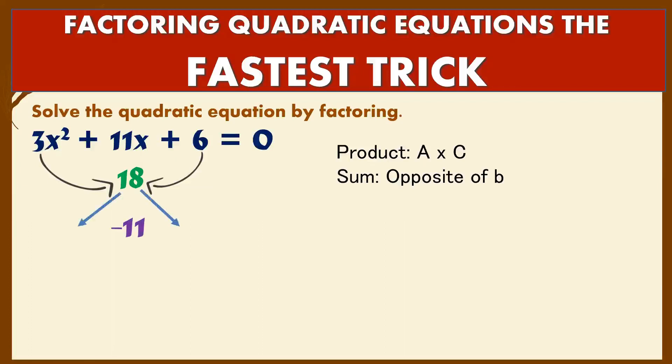Now you think of two factors of 18 that will sum up to negative 11. Negative 9 plus negative 2 is negative 11, then negative 9 times negative 2 is positive 18.